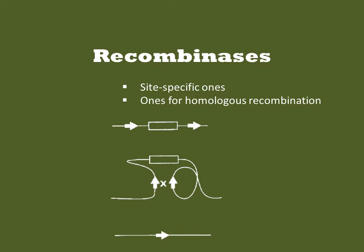Recombination involves rearrangements in DNAs over homologous sequences. There are some recombinases that act on very specific sequences, while others are not specific for the sequence at all — they just require that the two DNAs recombining have similar sequences.